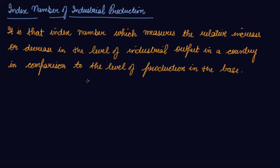In India, the base year is taken as 2004 and 2005. This index number tells us about the change in the quantum of production. So this is your index number and how we calculate the index number of industrial production.